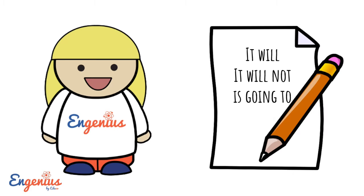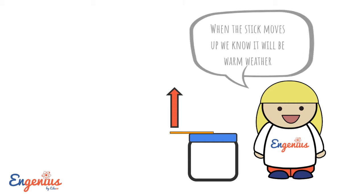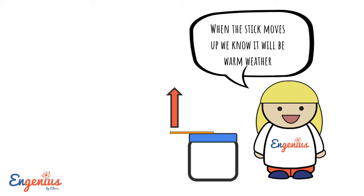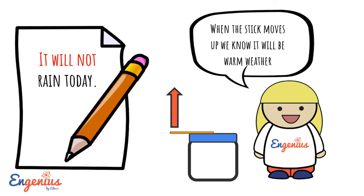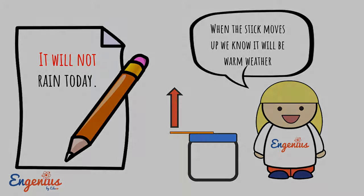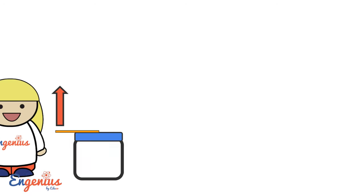It will, it will not, is going to. When the stick moves up, we know it will be warm weather. It will be warm today. It will not rain today.